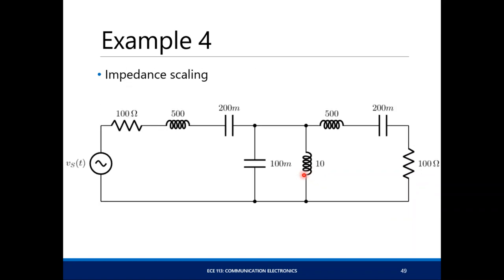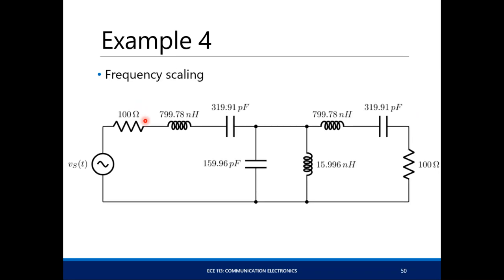After that, scale impedance to 100 ohms by multiplying all impedances by 100. Then scale by frequency, dividing all elements by the resonant frequency. You now have your bandpass Butterworth filter.